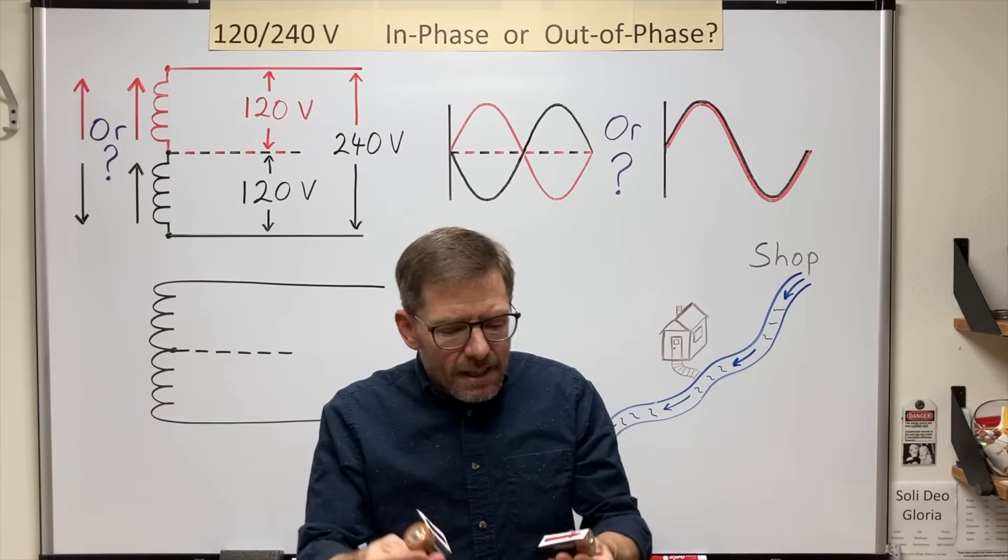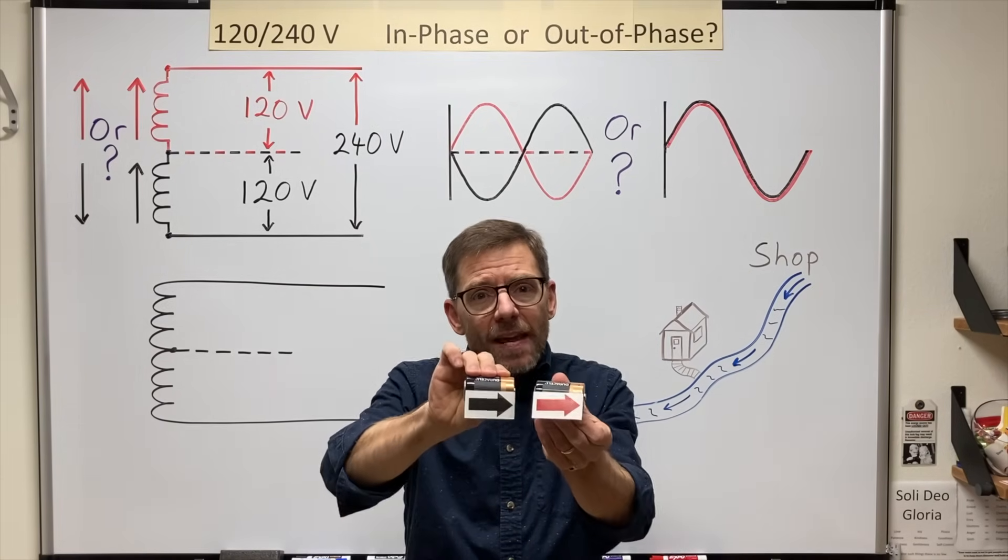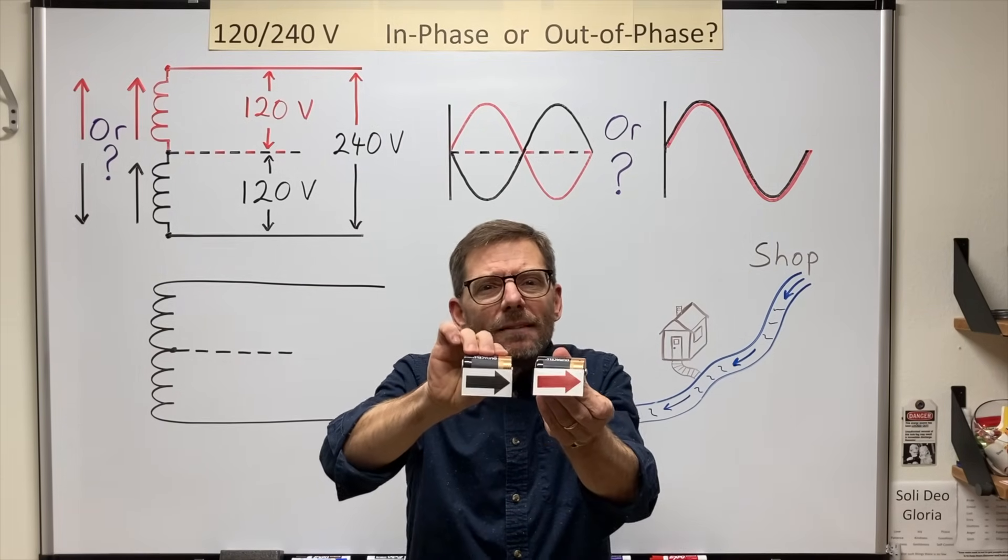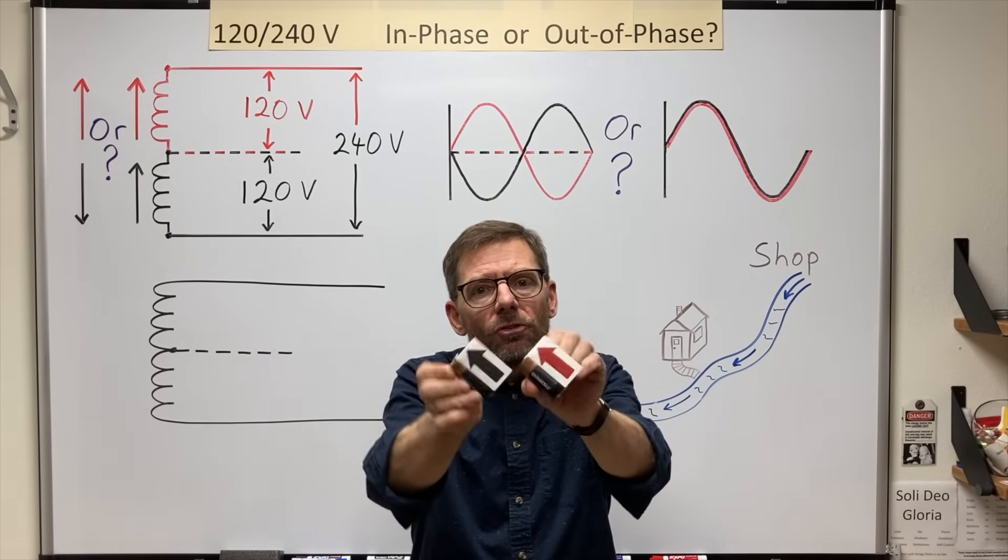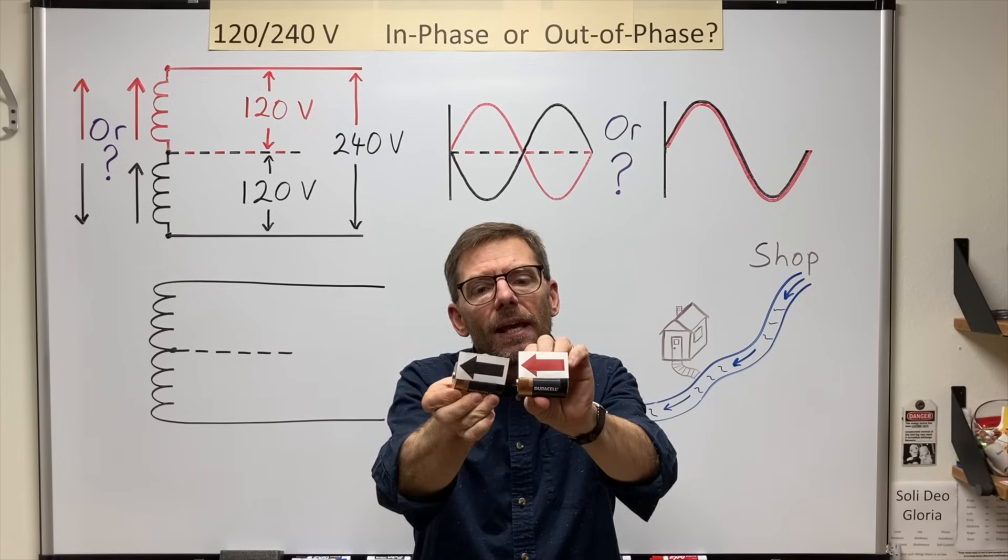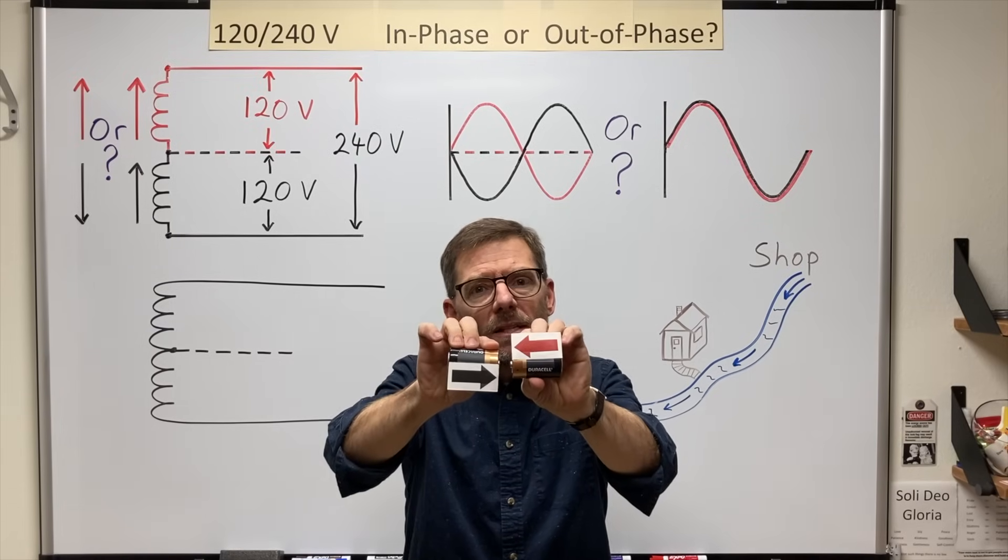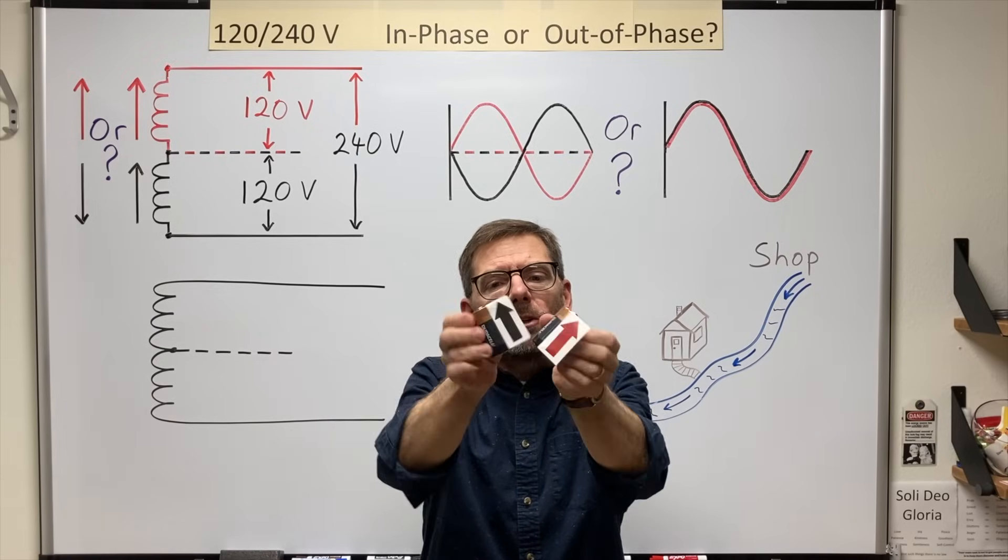Now, AC, yes, is always switching its positive negative orientation. It's polarity, if you will. But we can still use the batteries because we often analyze AC circuits at one moment in time. And the point I'm trying to make is that if the two are in phase, then they'll always be in phase, even as the AC cycles back and forward. And if they're out of phase, as the AC cycles, they will always oppose each other.